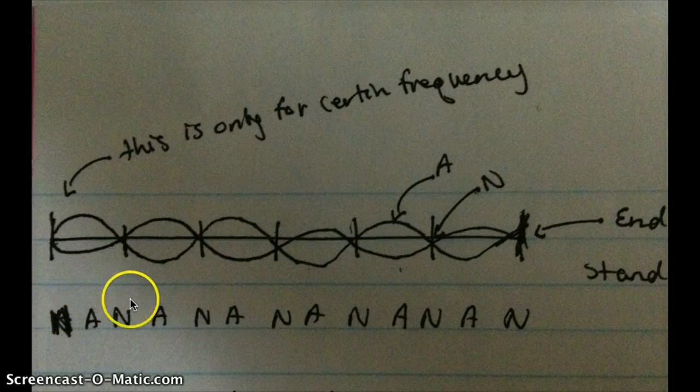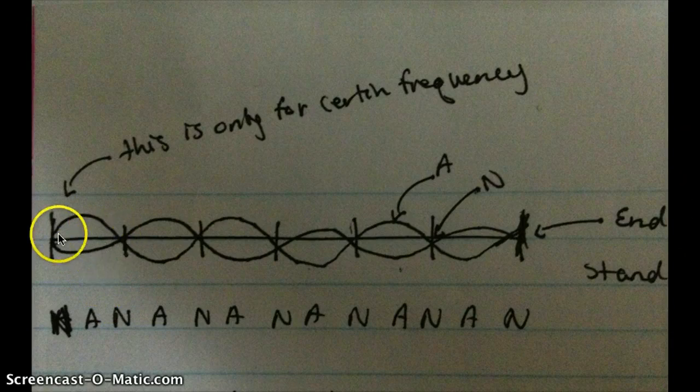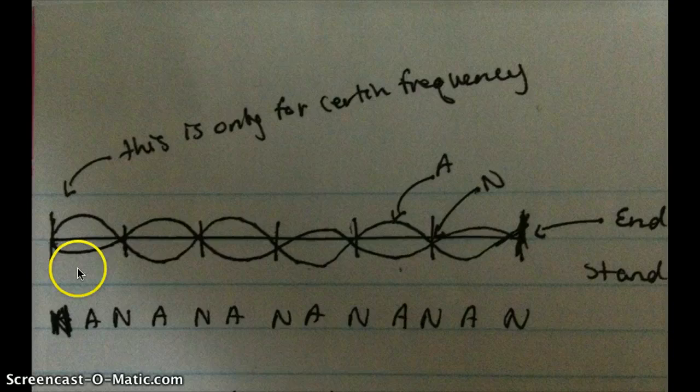A node to a node is a half of a wavelength. A node to an anti-node is a fourth.